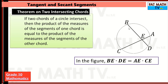For example, here we have a circle and two chords BD and AC intersecting at E. The segments formed by AC are AE and CE. So the product of AE and CE is equal to the product of BE and DE — the product of the segments of the other chord.